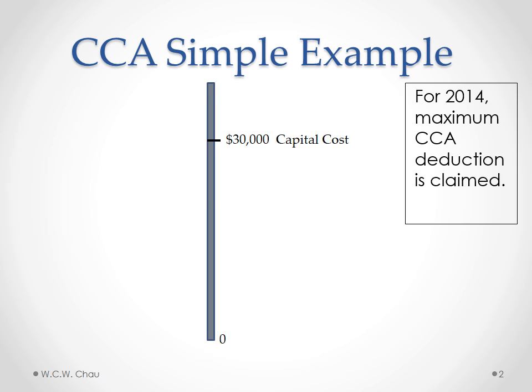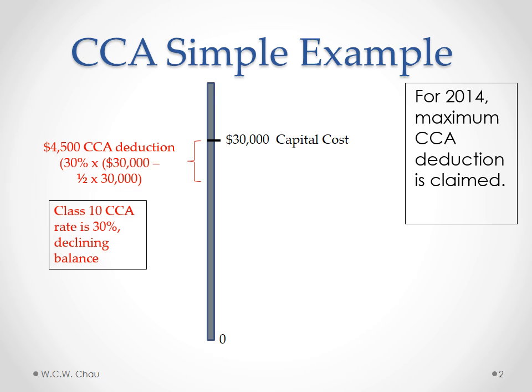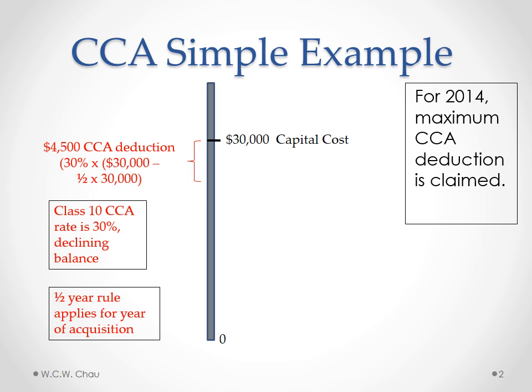So we have our starting point, which is the $30,000 balance for Class 10. In the first year, 2014, we will be assuming that Super Consulting will be claiming the maximum available CCA deduction. The amount will be $4,500. We arrive at that figure by applying the 30% CCA rate applicable for a Class 10 asset. We would usually apply that 30% to the balance of $30,000, but in the year that you acquire a new asset, there is something called the half-year rule, which only allows you to claim half of what you're usually able to claim. That's how we arrive at the $4,500.